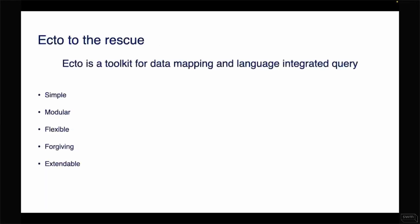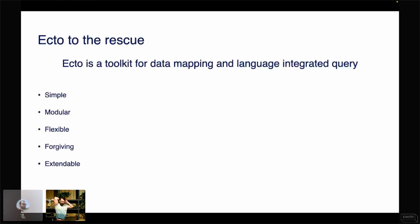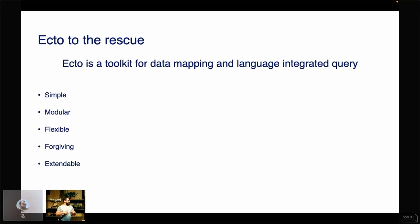A funny thing — when I was trying to find what Ecto actually is and what it provides, it isn't defined as an object-relational mapper, but as a toolkit for data mapping and language-integrated query. What does that mean? It means it provides us with tools to fetch data and map it into something actually usable without being too tied to the underlying data structure.